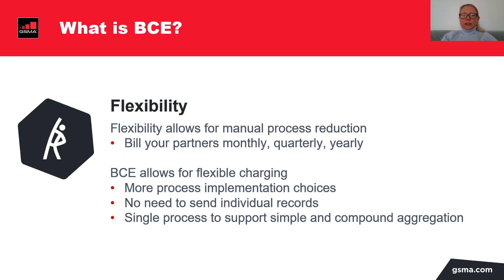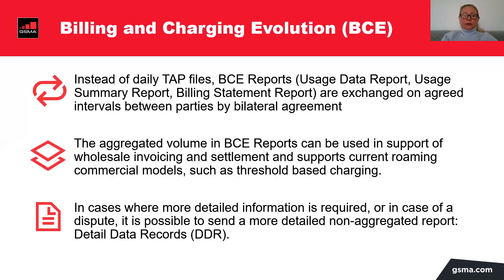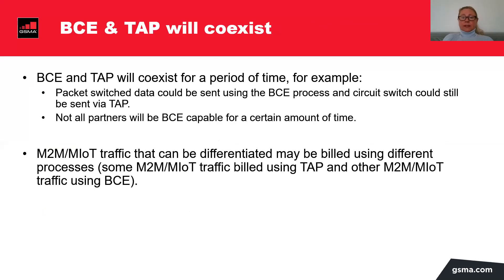Flexibility allows for manual process reduction. You can bill your partners monthly, quarterly, or even yearly if that's what you want. There is no need to send individual records anymore. TAP had good things about it, so we decided to keep what was good from TAP. Here's a short comparison: BCE reports are not sent daily. Usage data reports and usage summary reports are exchanged on aggregate intervals between parties. The aggregated volume in BCE reports can be used in support of wholesale invoicing and settlement. In cases where more detailed information is needed, you can still get the detailed CDRs. BCE and TAP will coexist for many years to come. Packet-switched data could be sent using BCE process, while circuit-switched could still be sent in TAP.